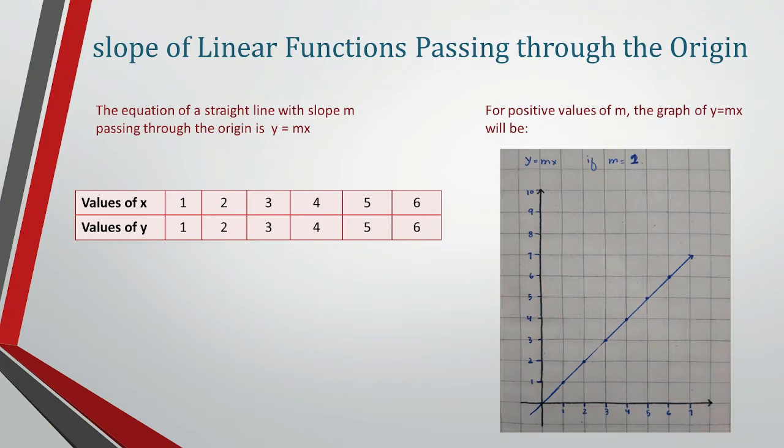Now, how to find the slope of a line which passes through the origin? The equation of a straight line with slope m passing through the origin is y = mx.